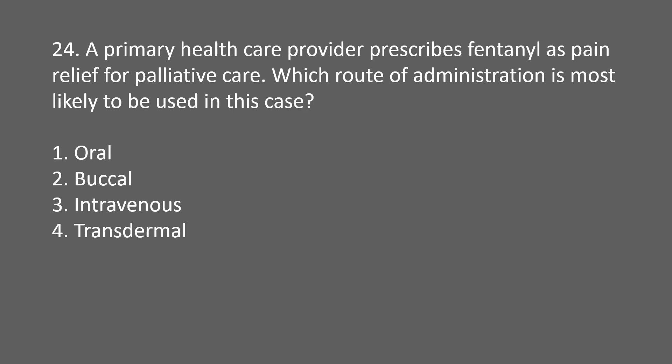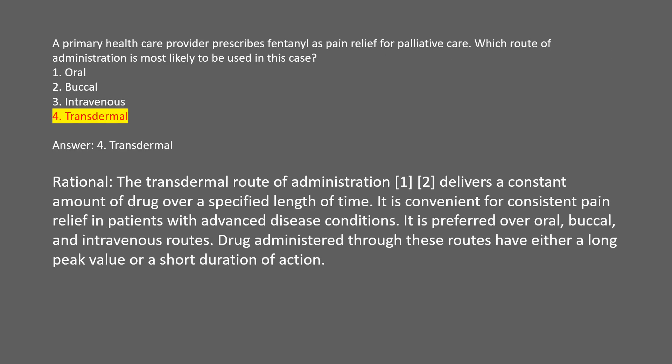A primary health care provider prescribes fentanyl as pain relief for palliative care. Which route of administration is most likely to be used? 1. Oral. 2. Buccal. 3. Intravenous. 4. Transdermal. Answer: 4. Transdermal. Rational: the transdermal route delivers a constant amount of drug over a specified length of time, which is convenient for consistent pain relief in patients with advanced disease. Oral, buccal, and intravenous routes have either a long peak value or a short duration of action.